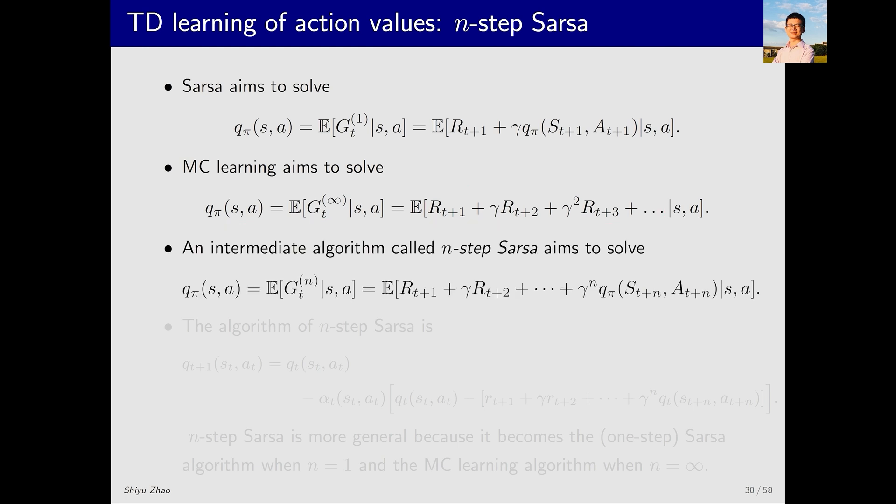The intermediate form is N step SARSA, which means it may not be 1 or infinity but somewhere in between. The resulting equation is Q pi S A equals E of RT plus 1 plus RT plus 2 and so on up to RT plus N plus Q pi S T plus N AT plus N. How do we solve this equation? We use the following algorithm.